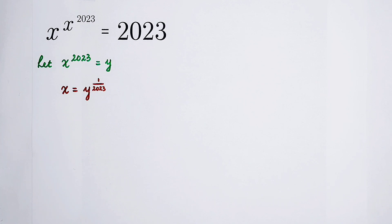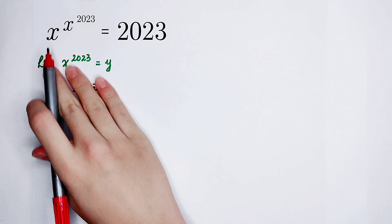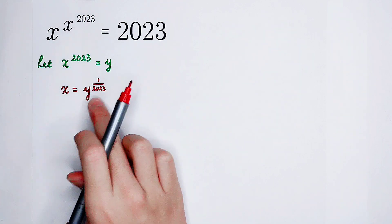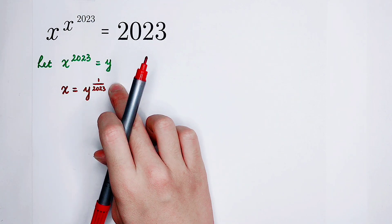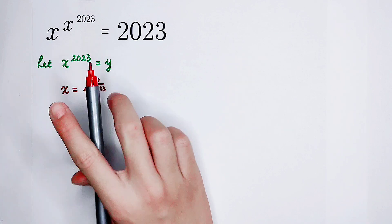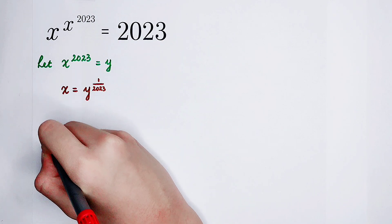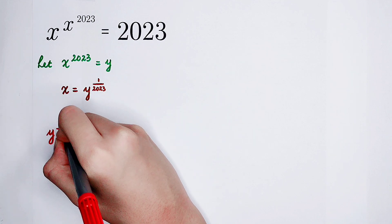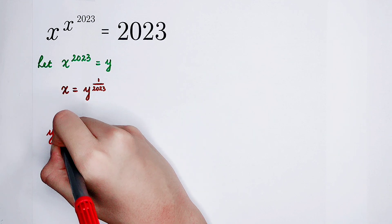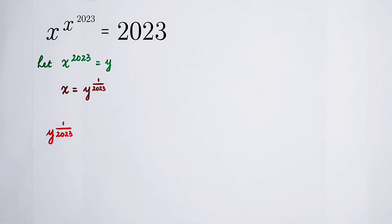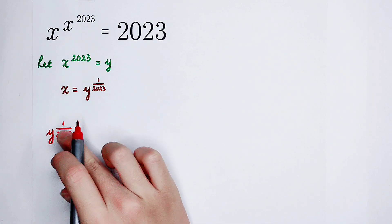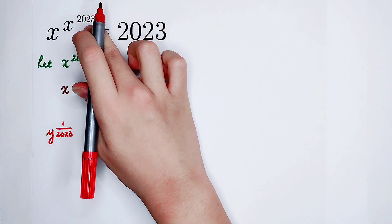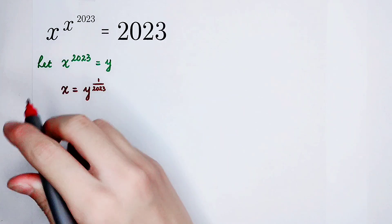Wonderful, isn't it? Let's substitute them into our original equation. The base x is y to the power of 1 divided by 2023. Now the base x is y to the power of 1 over 2023, and the exponent x to the power of 2023 is equal to y.